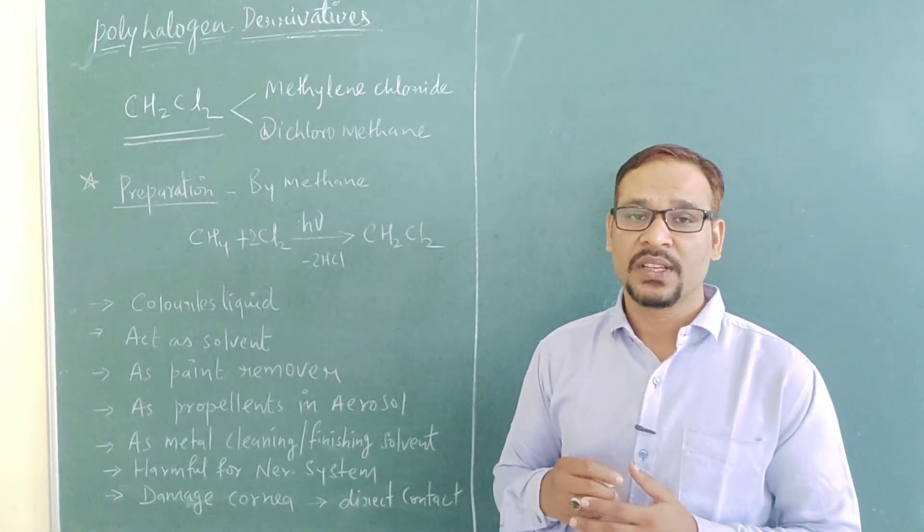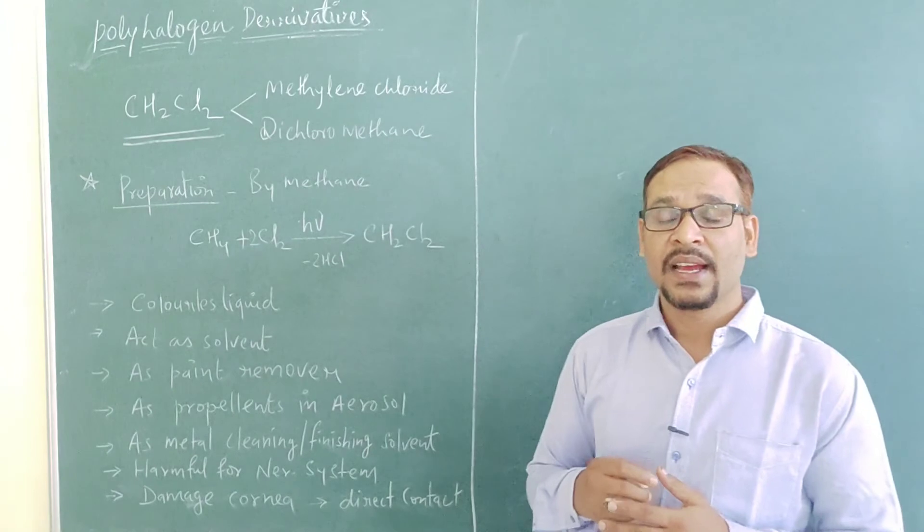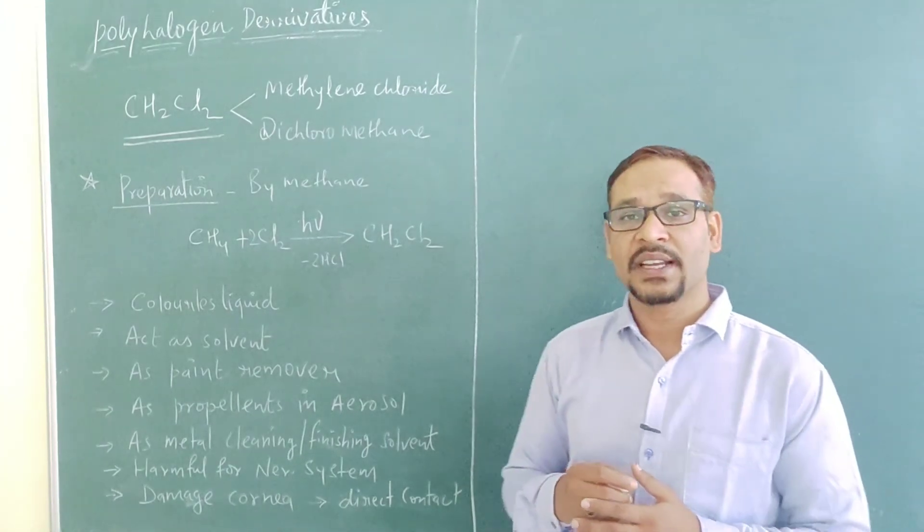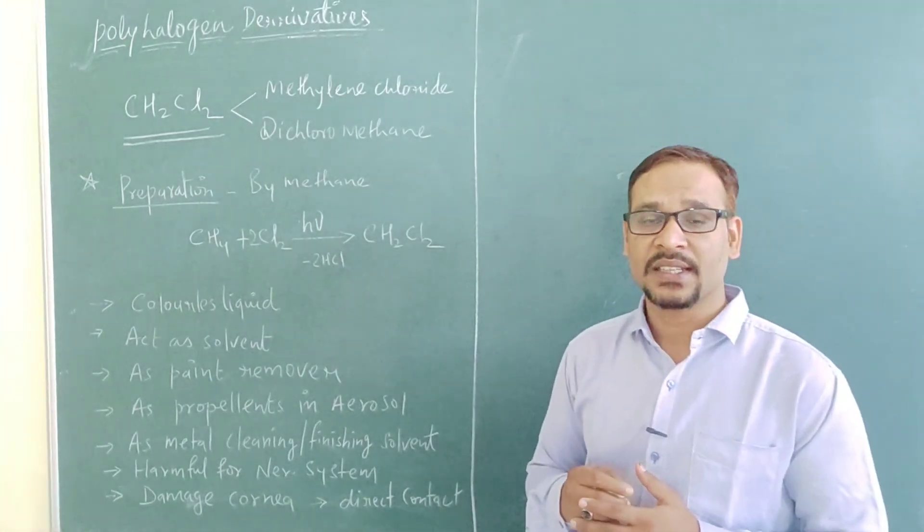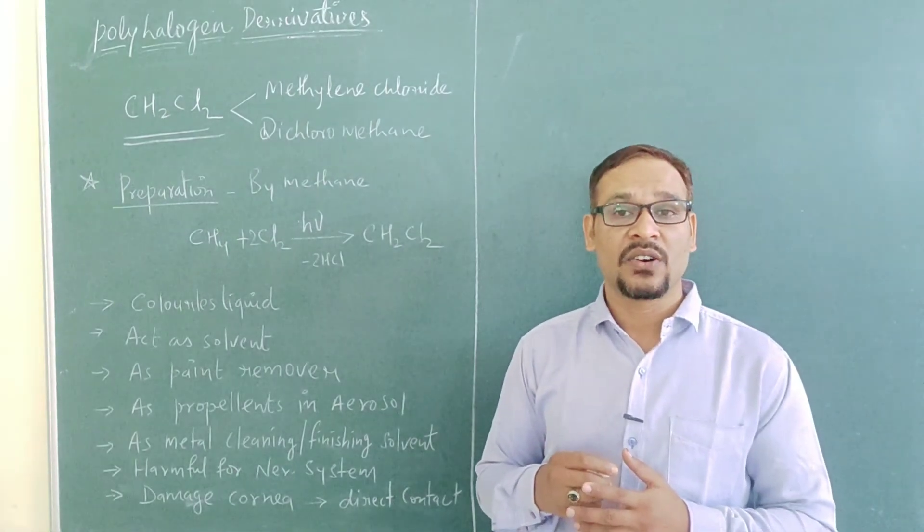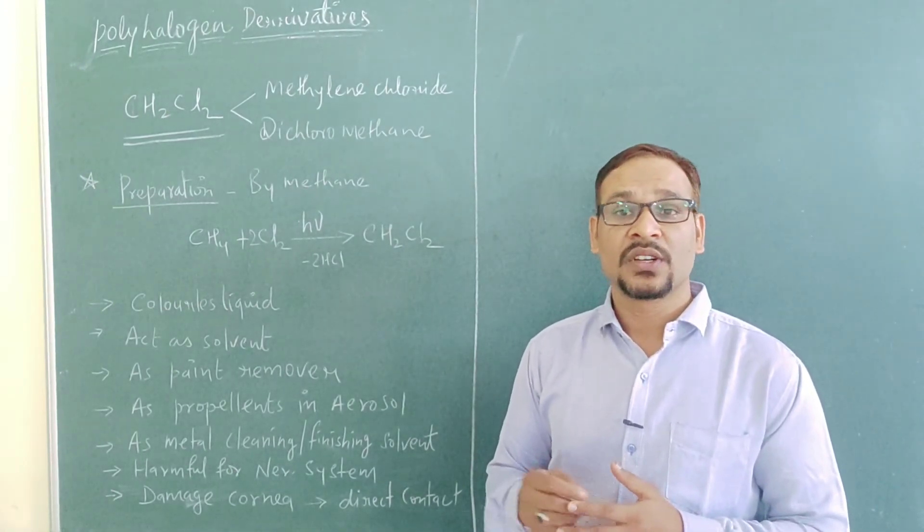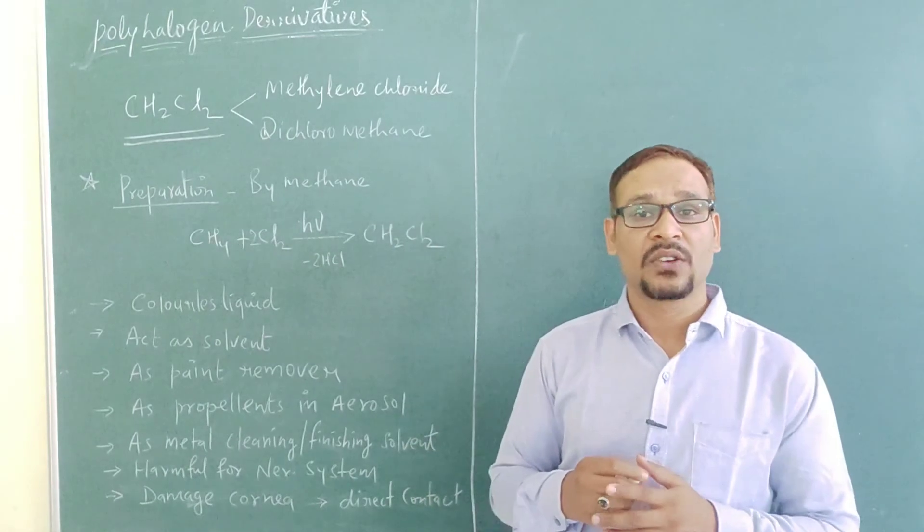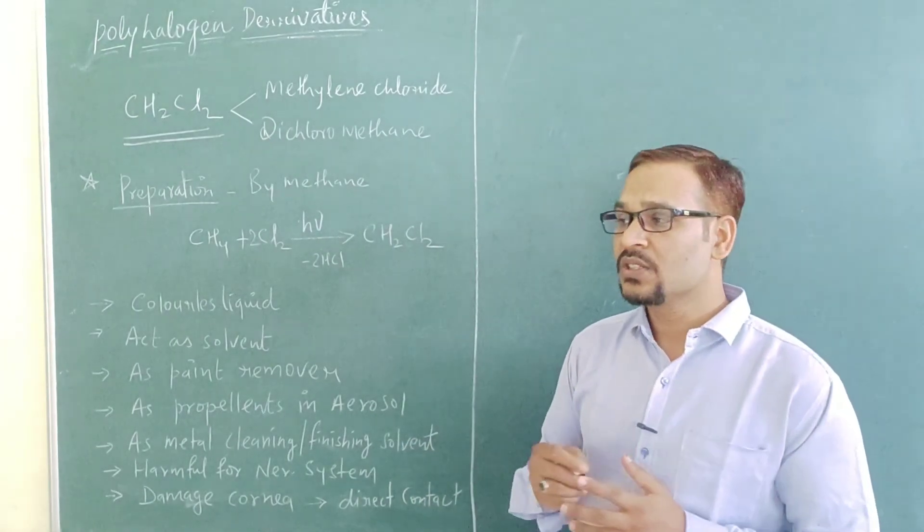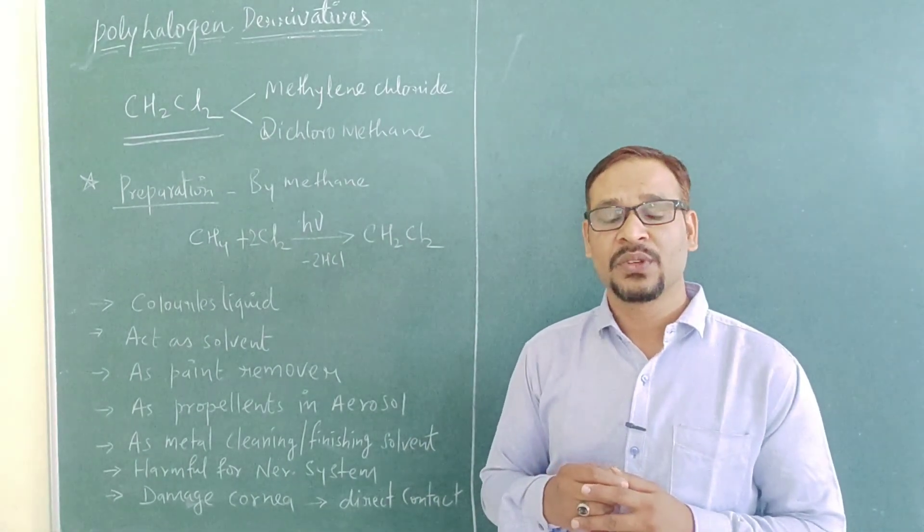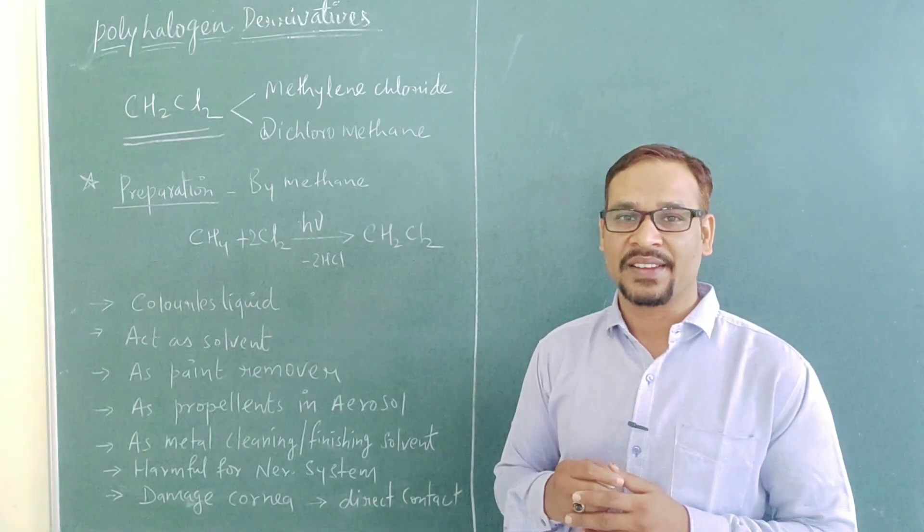It is very harmful for our nervous system. If it comes in direct contact with the eyes, it can damage your cornea and cause blindness. So this is all about the halogen derivatives. Hope you enjoy your learning, thank you.